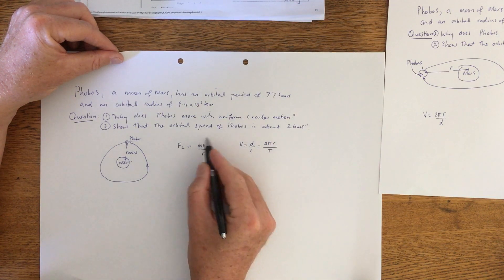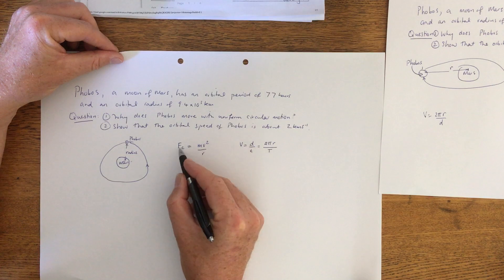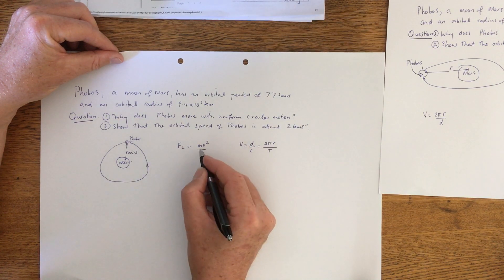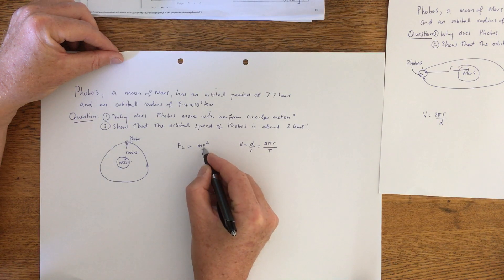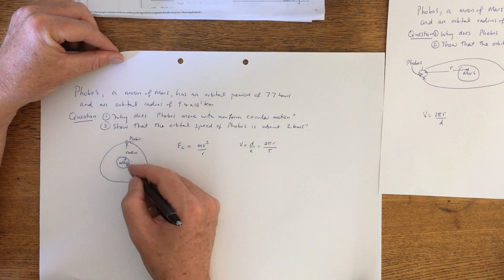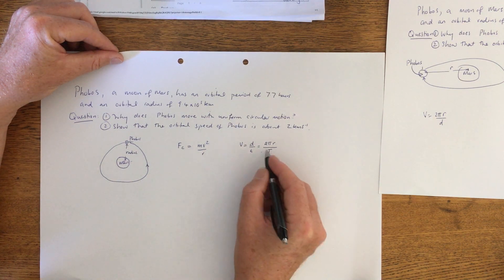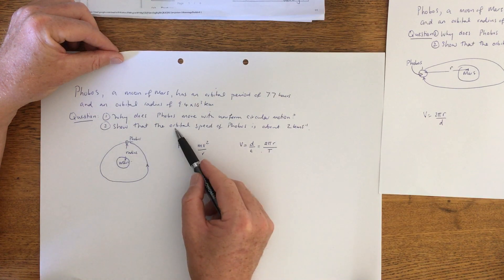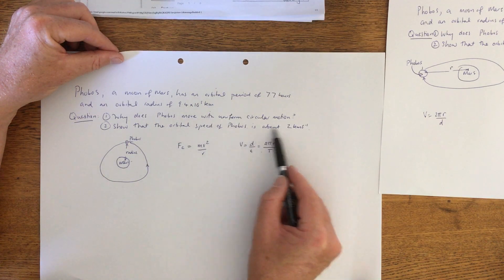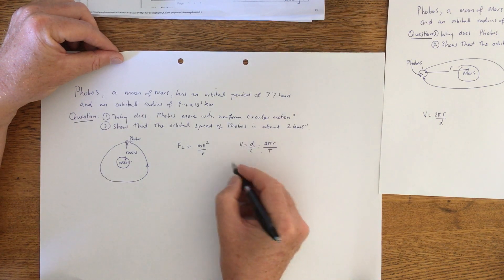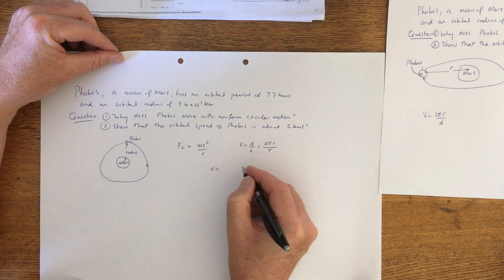The centripetal force on Phobos is to do with its mass, its velocity squared divided by the radius — the distance apart. It's the velocity equation, not the centripetal force equation, that's going to lead us to show why there is an orbital speed of Phobos. They're saying that it's 2 kilometers per second, so all we have to do is substitute this in.